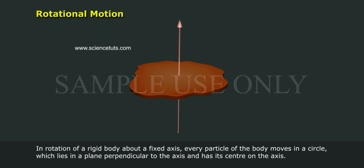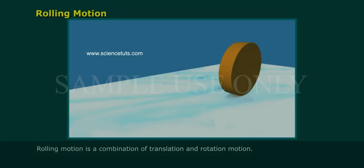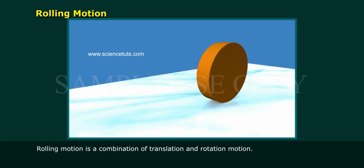In rotation of a rigid body about a fixed axis, every particle of the body moves in a circle which lies in a plane perpendicular to the axis and has its center on the axis.